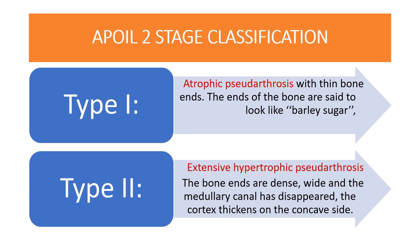The Apoint two-stage classification has two types: Type 1 is atrophic pseudarthrosis, and Type 2 is extensive hypertrophic pseudarthrosis.